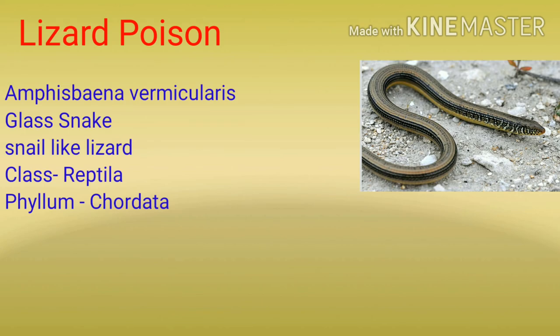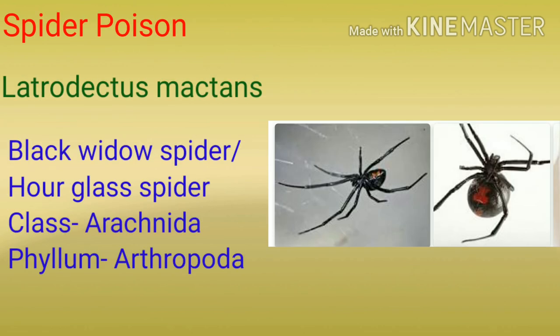When we are talking about snake venom, we cannot leave behind lizard poison. We have a medicine from lizard poison from Amphisbaena vermicularis, or glass snake or snail-like lizard, class Reptilia, phylum Chordata. We have also got medicine from spider poison from Latrodectus mactans, commonly called black widow spider or argla spider, class Arachnida, phylum Arthropoda.